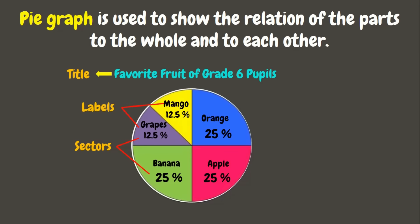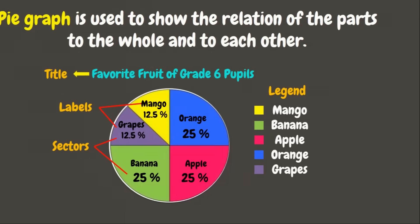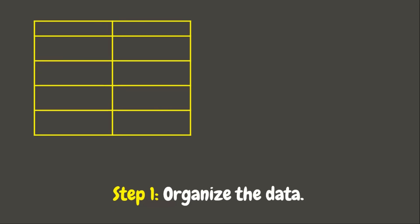Labels can also be shown in the form of a legend. Now that you already know what the pie graph is, let us make one. The first step is to organize the data. You can do this by drawing a table. We need to determine the important facts that you would want to see in your graph.